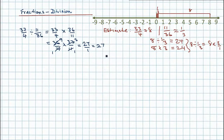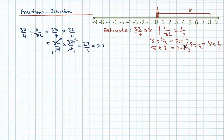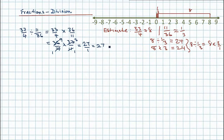Whenever we complete a problem, it's a good idea to check that we've got something that sounds reasonable. And 27 and 24 — they're not so far apart. My estimate was 24, and my actual answer is 27. I'm going to say that is very close, and so I think I've got the right result.